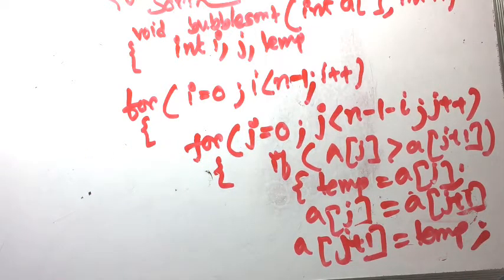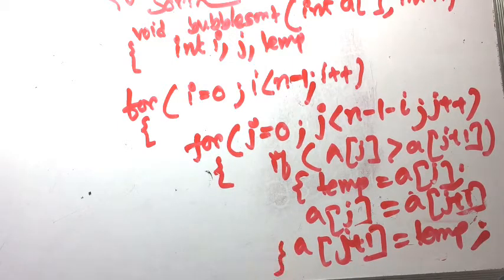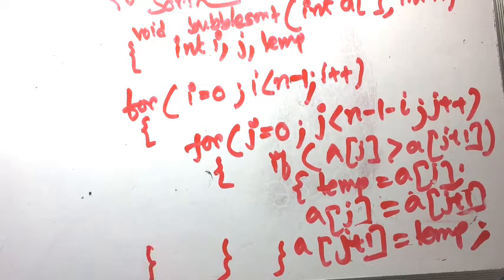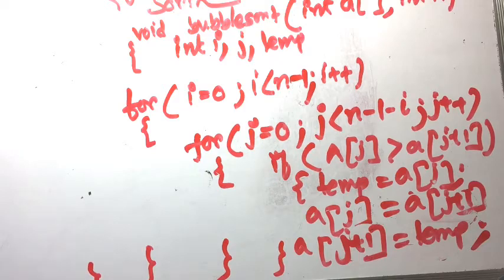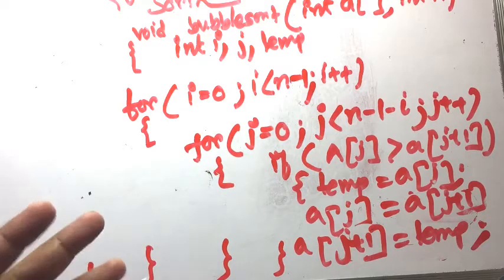This is the swapping of two variables. After the swap, there is the end of the j loop and the end of the i loop, and this is the end of bubble sort. This is the concept through which bubble sort is implemented — it is a simple concept.